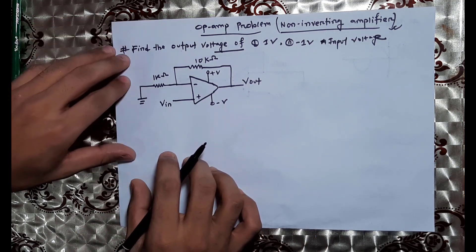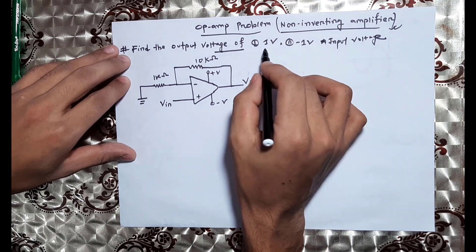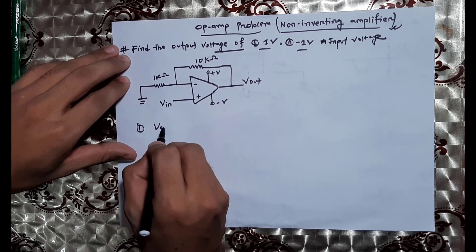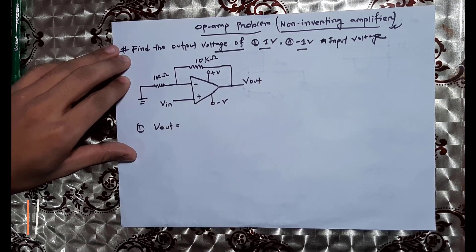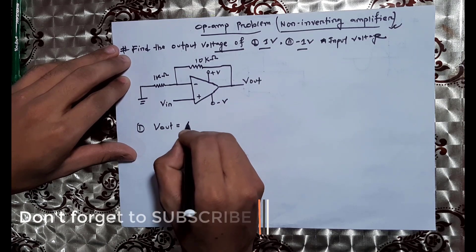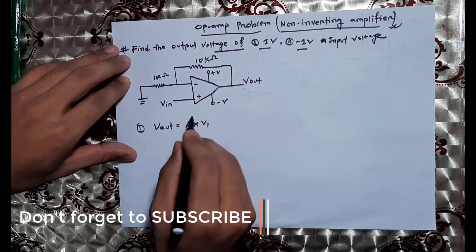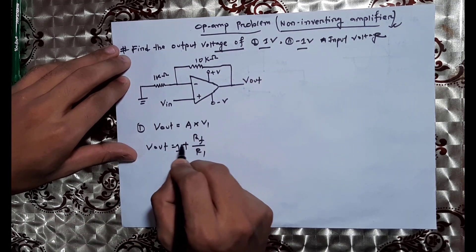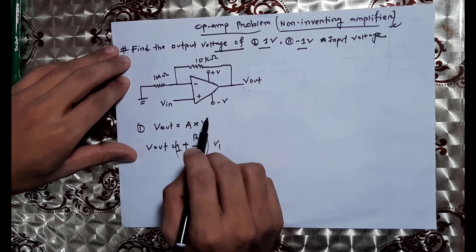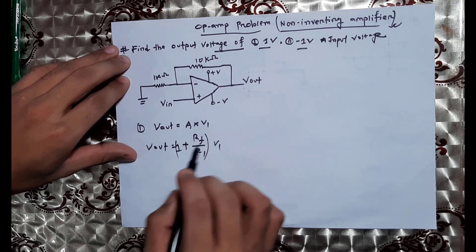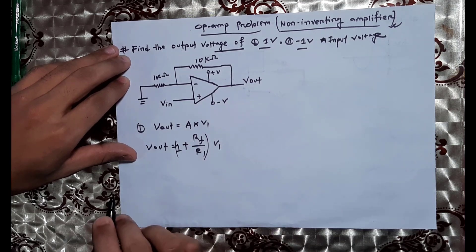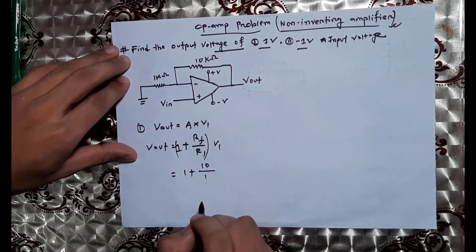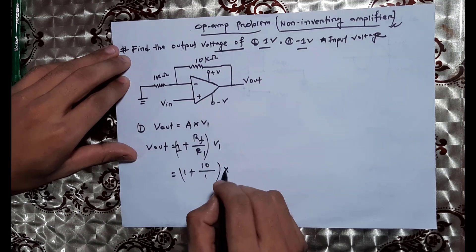The first problem: the output voltage is 1V and minus 1V. The output voltage Vout is equal to A into V1. In this video, I will show that Vout is equal to 1 plus Rf divided by R1, into V1. This is the non-inverting amplifier formula.